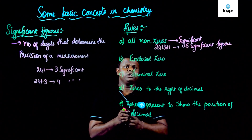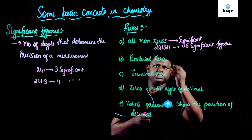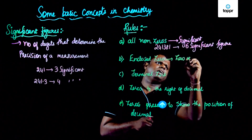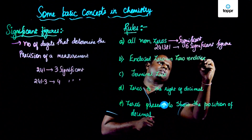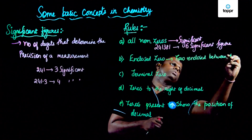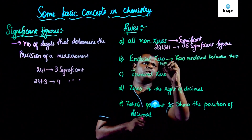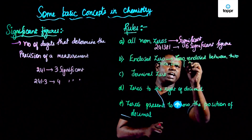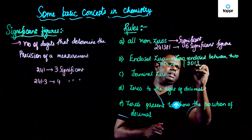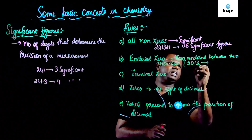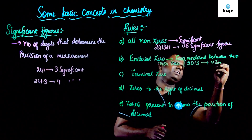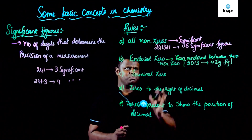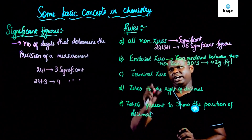Now let's talk about the enclosed zero. An enclosed zero means it is basically a zero enclosed between two non-zero digits. For example, if I have something like 2, 0, 1, 3 — this has 1, 2, 3, 4 significant figures. So zeros enclosed between two non-zero digits are significant.